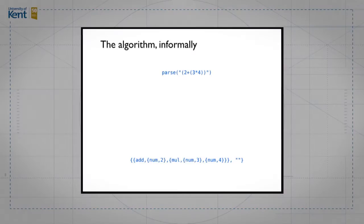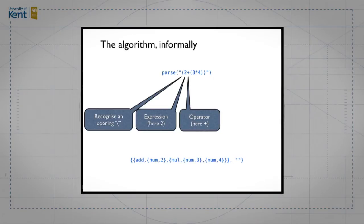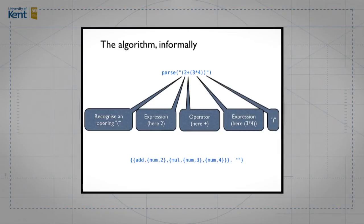Now let's think about what happens when we parse the string that begins with the parenthesis — the running example we've been using. What do we have to do to recognize that string? First, we spot that it begins with a parenthesis. Then we spot that there's an expression — here the expression is '2'. Then we spot there's an operator, which here is plus. Then we spot another expression beginning with a parenthesis: the bracketed expression '3 times 4'. And finally we spot the closing parenthesis. That's the algorithm informally: parenthesis, expression, operator, expression, parenthesis.